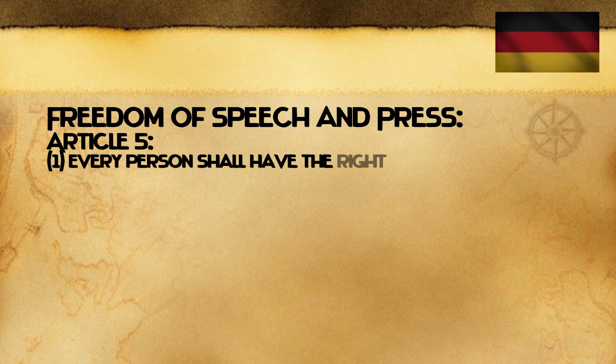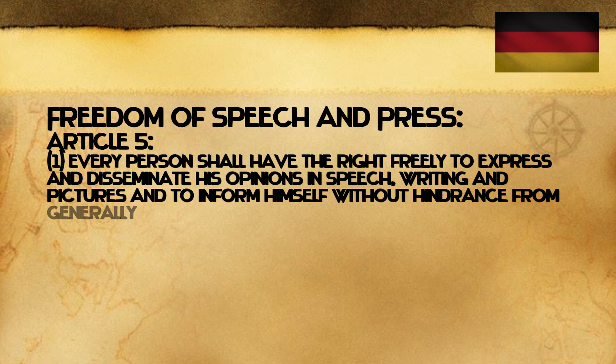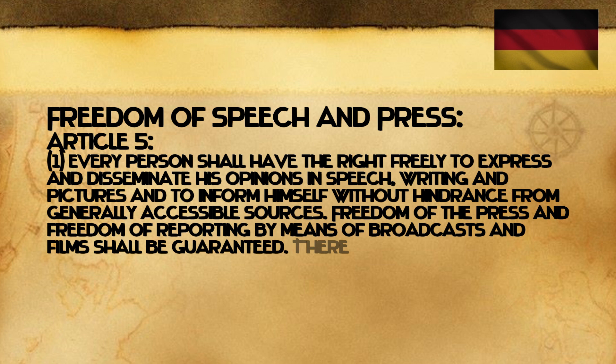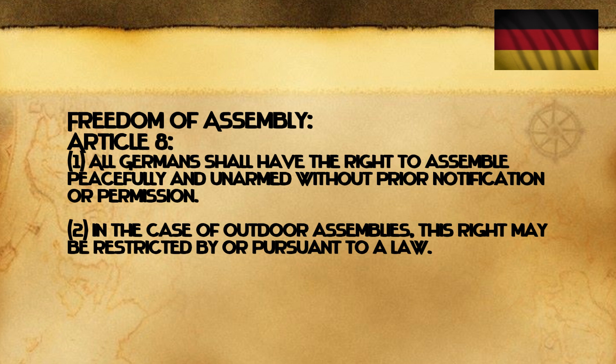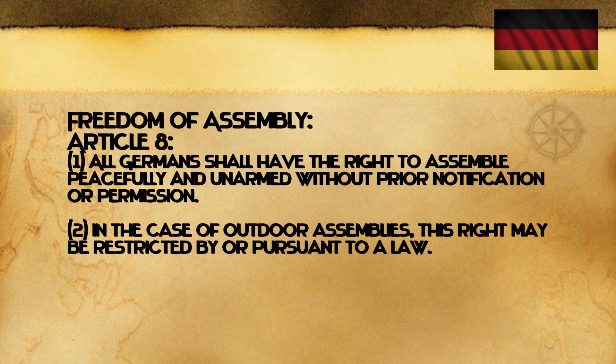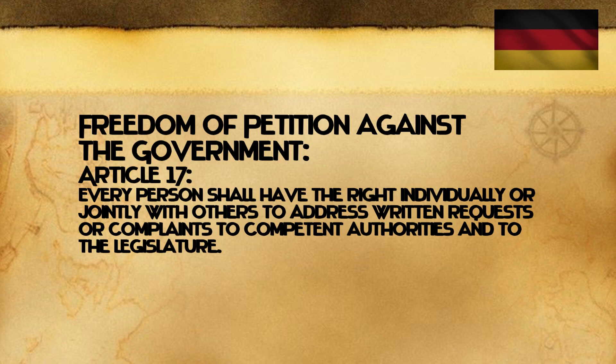In terms of freedom of speech and press, we have Article 5: "Every person shall have the right freely to express and disseminate his opinions in speech, writing, and pictures, and to inform himself without hindrance from generally accessible sources. Freedom of the press and freedom of reporting by means of broadcast and film shall be guaranteed. There shall be no censorship." In terms of freedom of assembly, we have Article 8: "All Germans shall have the right to assemble peacefully and unarmed without prior notification or permission. In the case of outdoor assemblies, this right may be restricted by or pursuant to a law." And the freedom of petition against the government is Article 17: "Every person shall have the right individually or jointly with others to address written requests or complaints to competent authorities and to the legislature."